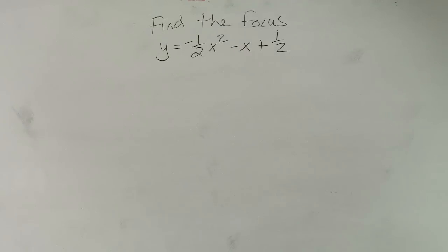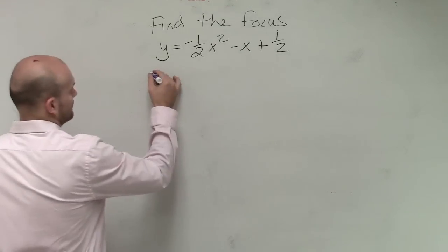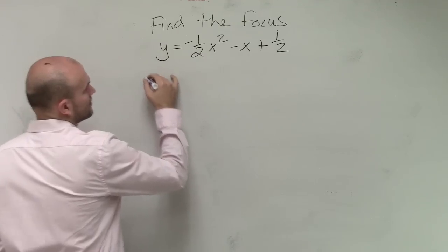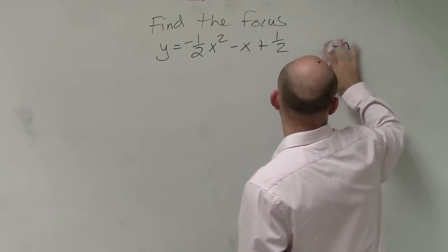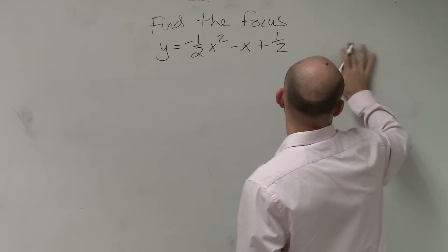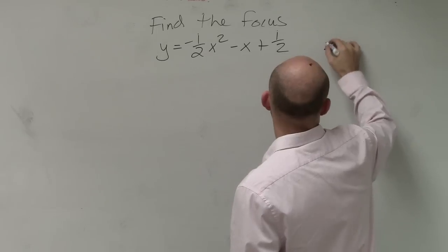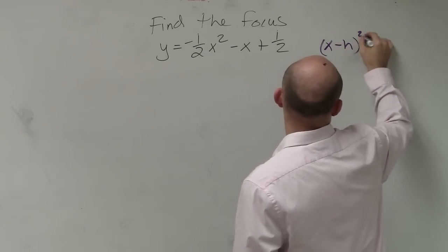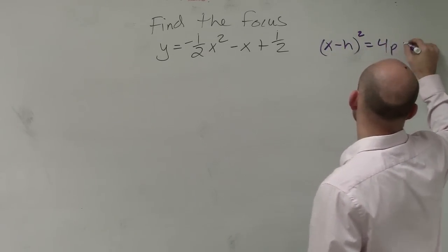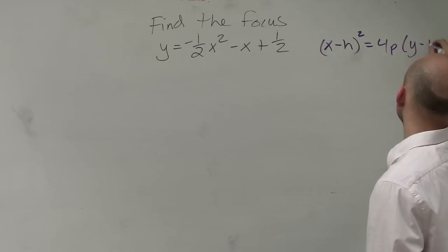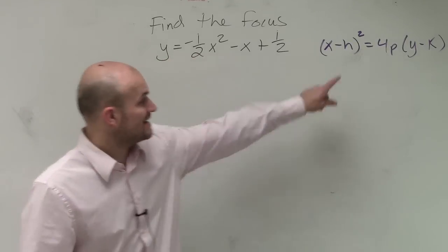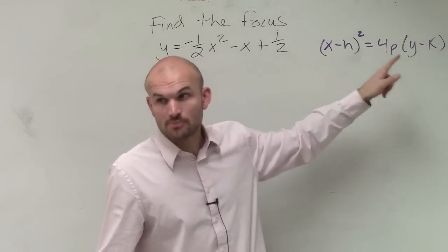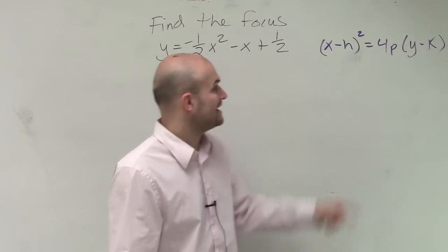So to find the focus, since we know this is vertical, we know that it's going to have to be in this format. x minus h squared equals 4p times y minus k. We're going to have to write it in this format to find out what our focus is, which is our p.